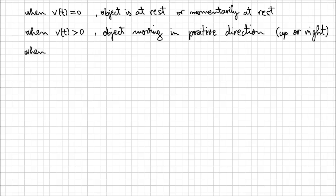When velocity v of t has a negative value, the object is moving in a negative direction. Similarly, let's analyze what happens for the acceleration.